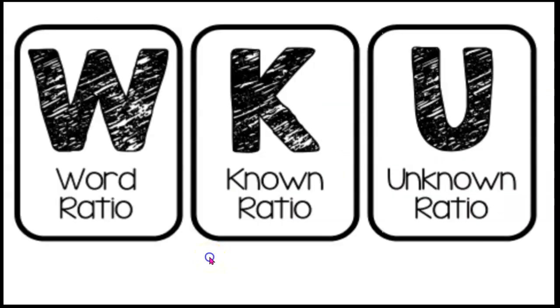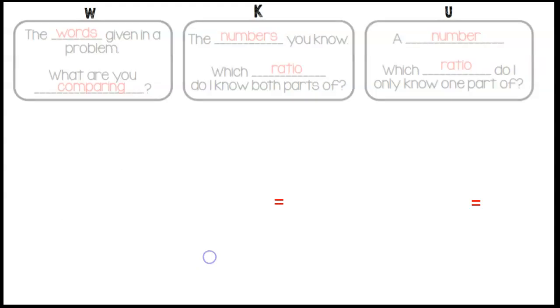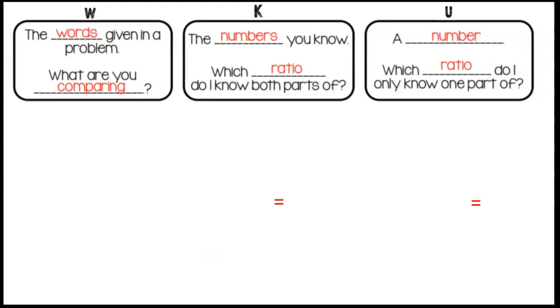Set up and solve proportions. W, which stands for word ratios, are the words given in the problem. What are you comparing? You can determine the word ratio by looking for those words and setting up a ratio. K stands for the known ratio. This ratio comes from the numbers that you know. Which ratio do you know both parts of? And U stands for unknown ratio. Usually you're going to find just a number by itself. Which ratio do I only know one part of?